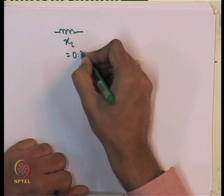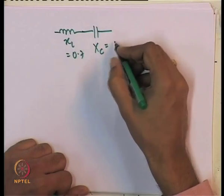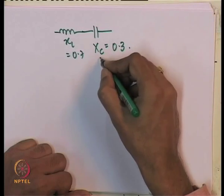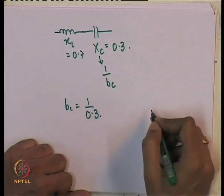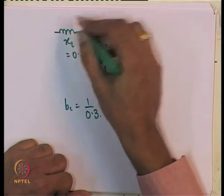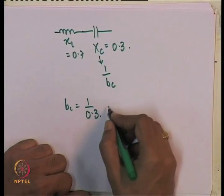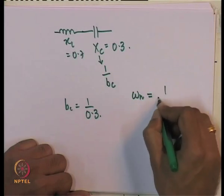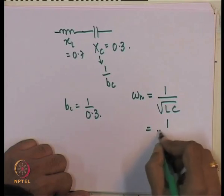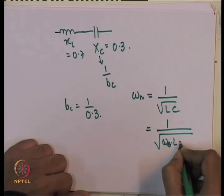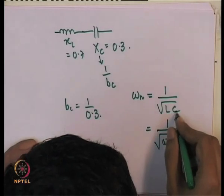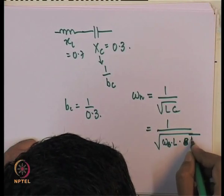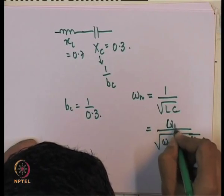In this network, x_L equals 0.7 and x_C equals 0.3 in each phase, so b_C equals 1/0.3. If you look at just this phase in isolation, the natural frequency is 1/sqrt(LC). This is equivalent to omega_B times sqrt(x_L * b_C) in per-unit terms — and the natural frequency is the same whether you express x_L and b_C in per unit or actual values.